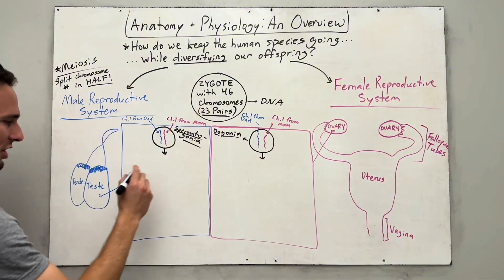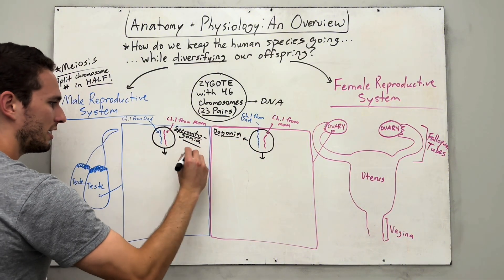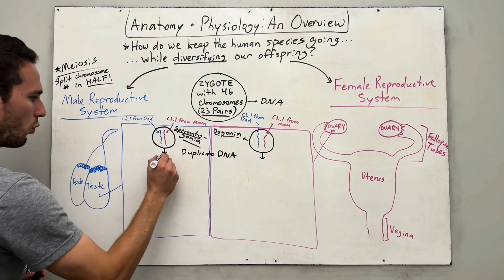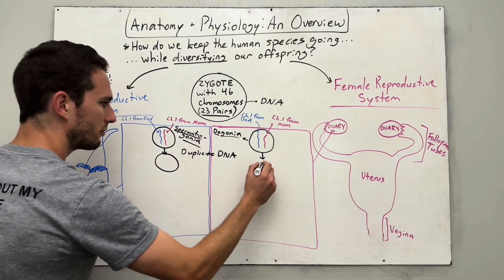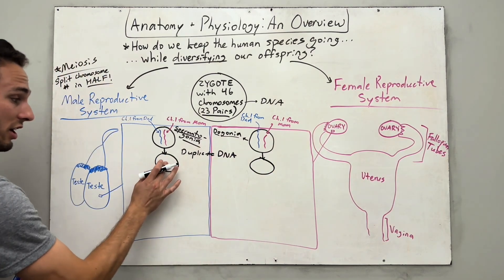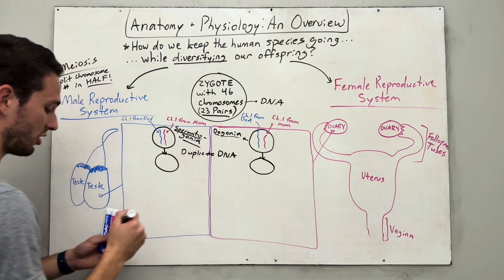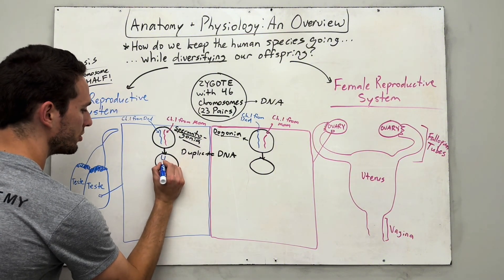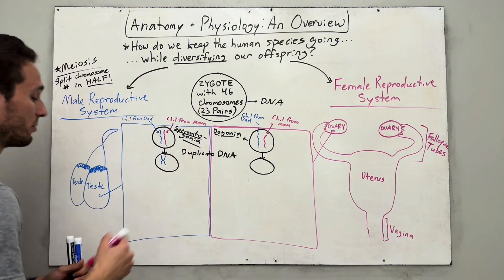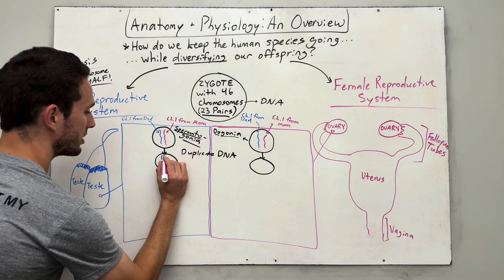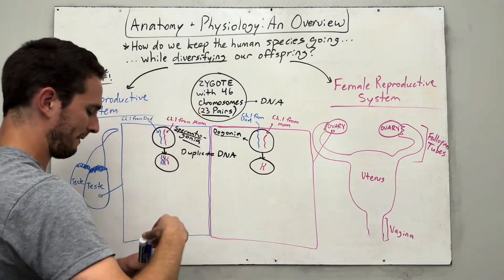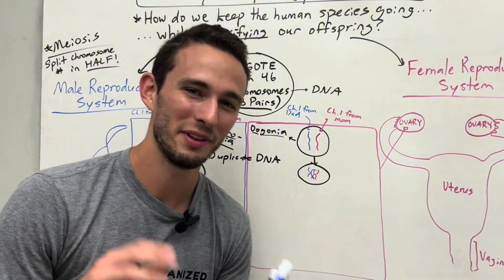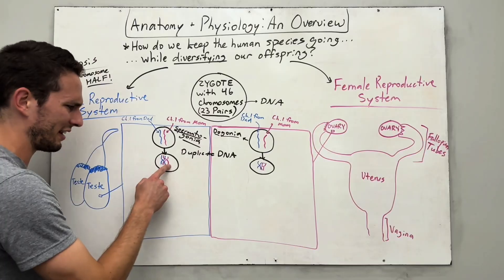What's going to happen here? We are first going to duplicate the DNA on both sides. So we'll have one cell — one's going to turn into the sperm, one's going to turn into the egg — and they will have twice the number of chromosome ones, as well as twice the number of chromosome twos, and so forth and so on, 23 times over.